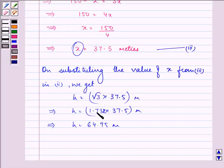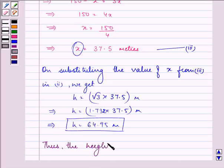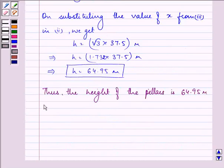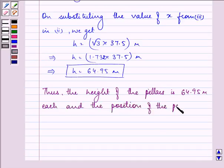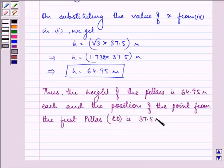We can also take the value of root 3 to 3 decimal places, that is 1.732 to get the required answer. Now, the answer is thus, the height of the pillars is 64.95 meters each. And the position of the point from the first pillar that we took as CD is 37.5 meters away.